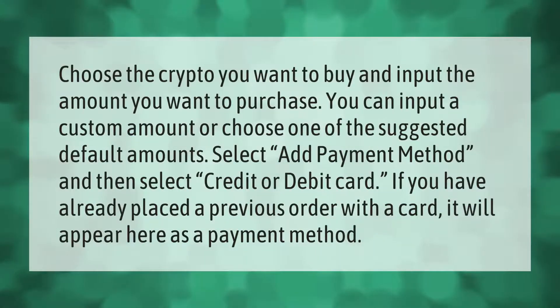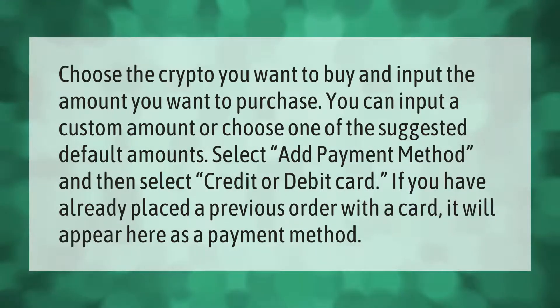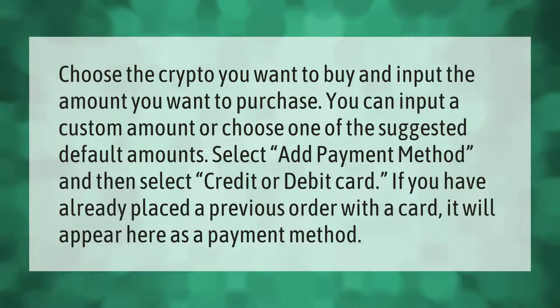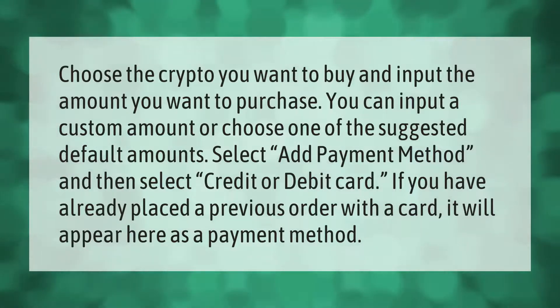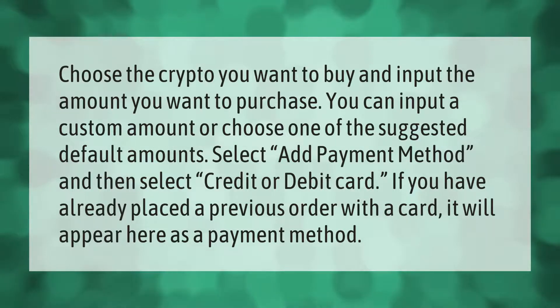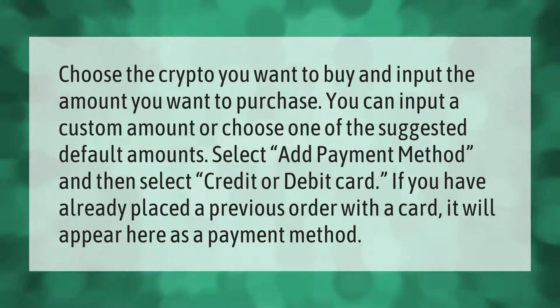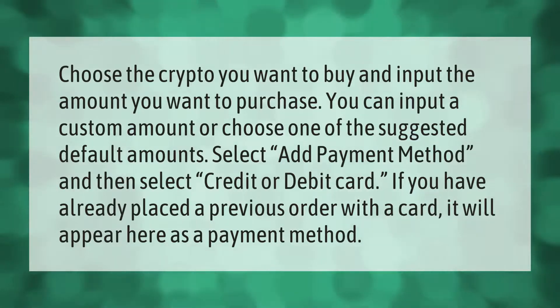On your dashboard, choose the crypto you want to buy and input the amount you want to purchase. You can input a custom amount or choose one of the suggested default amounts. Select 'Add Payment Method' and then select 'Credit or Debit Card'. If you have already placed a previous order with a card, it will appear here as a payment method.